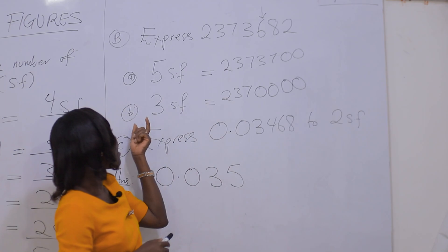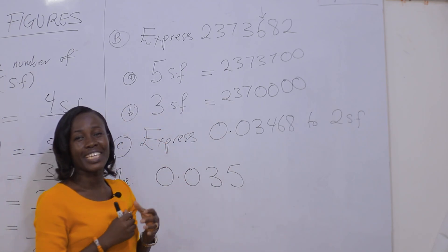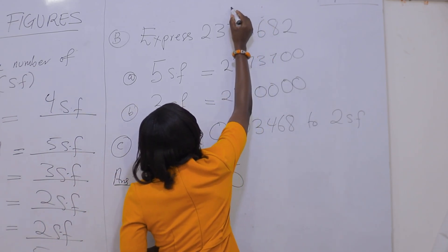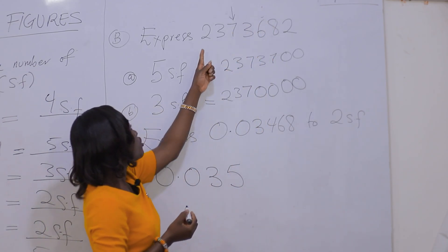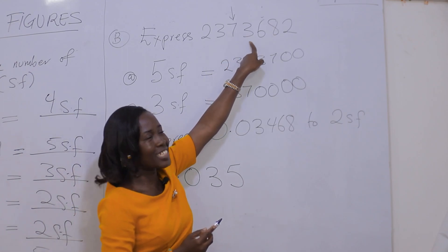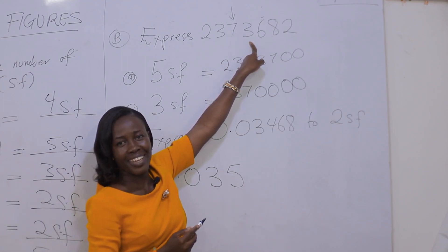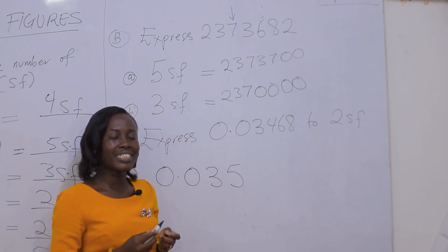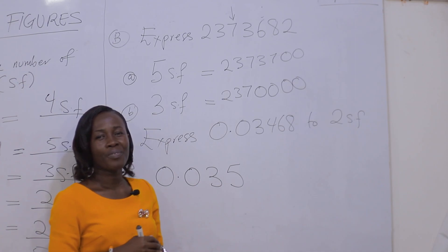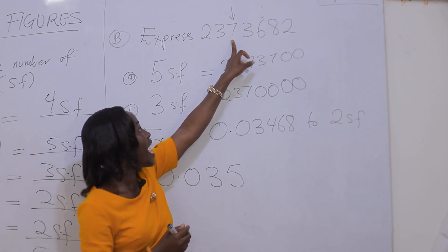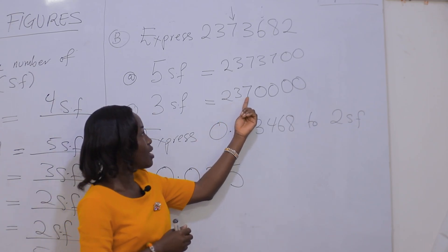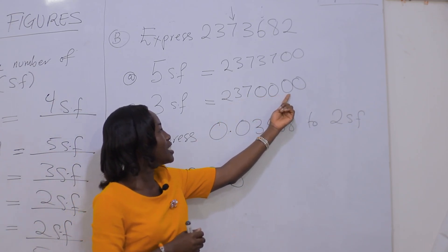The same number we are expressing to 3 significant figures. And so our last 3 significant figures will be on 7: 2, 3, 7. We then consider the next number on the right, 3. 3 is less than 5, so we round it down to 0. And so we maintain the last significant figure as it is, giving us 2370000.